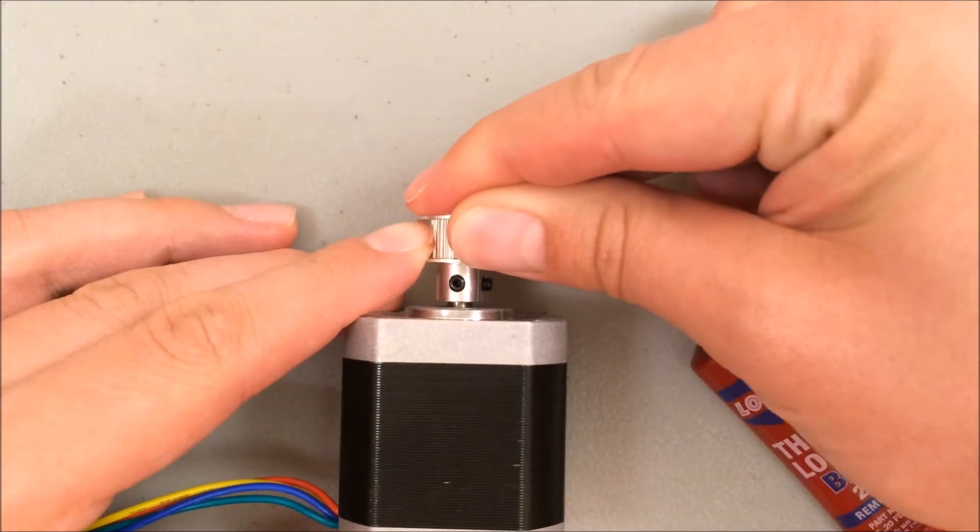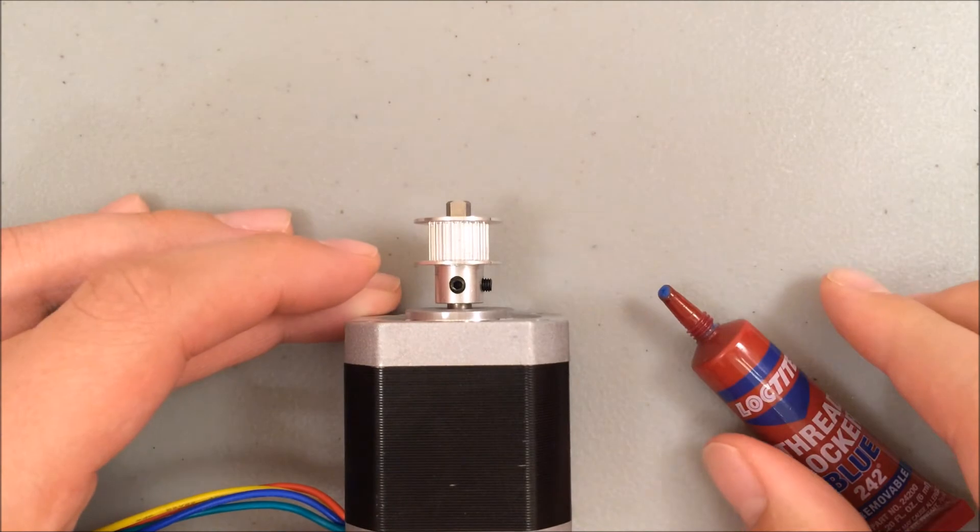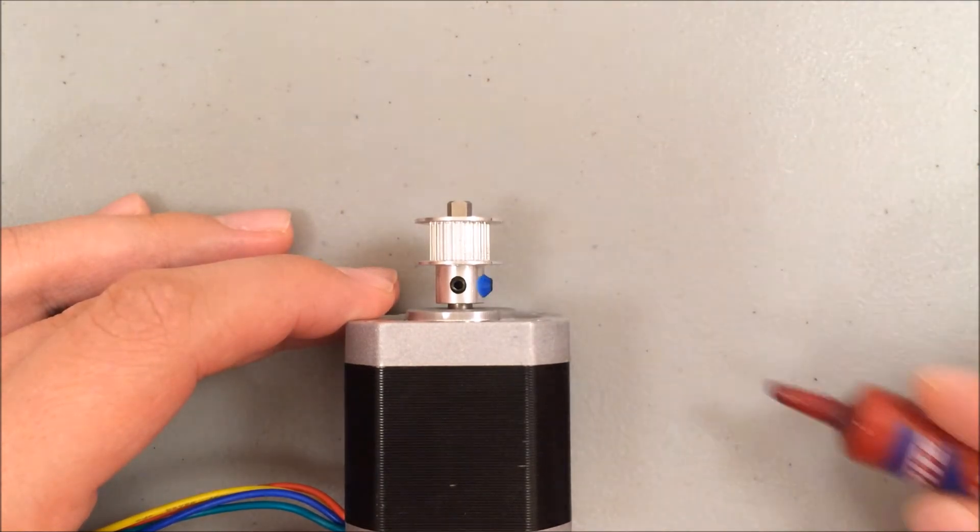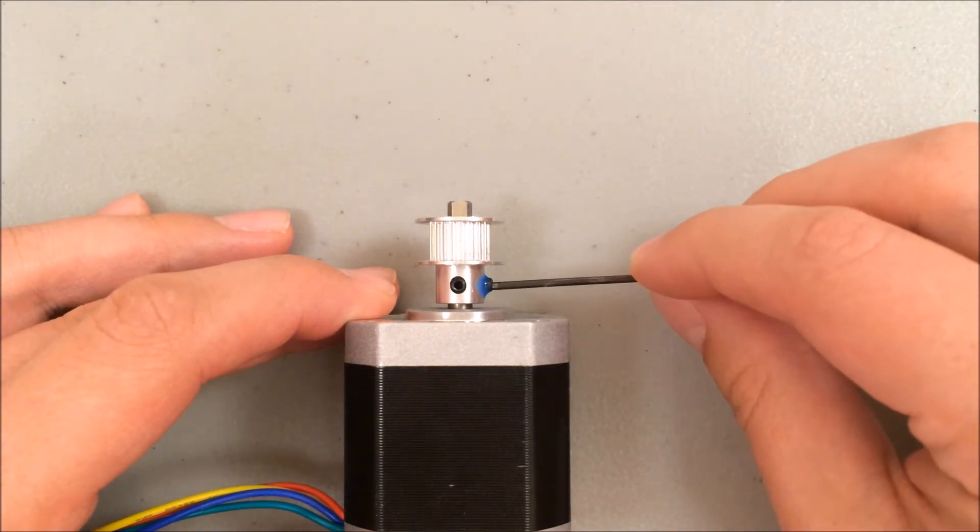Now that I have that lined up I'm ready to start applying ThreadLocker. So I apply it to the first set screw that I haven't tightened all the way and then tighten that in place.